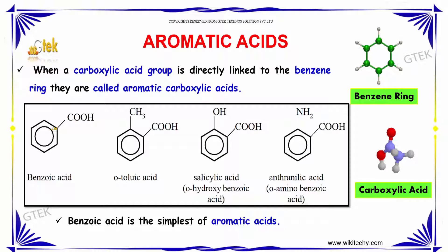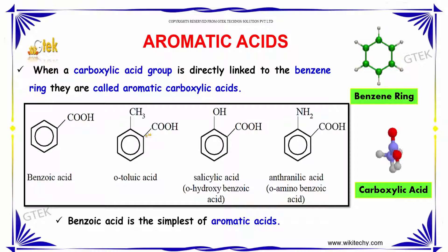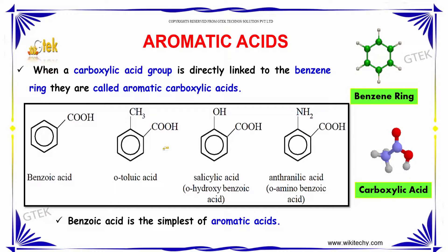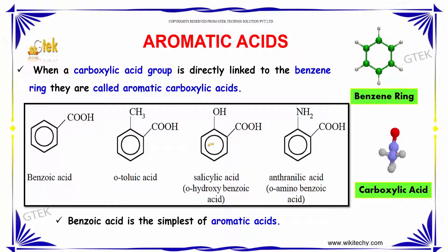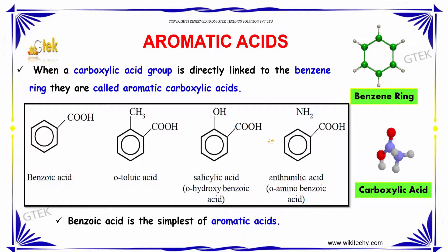When the COOH group is attached to benzene, it is called benzoic acid. When it is attached to toluene, it is called orthotoluic acid. Similarly, if this group is present at the meta position, it is called metatoluic acid. When it is attached to phenol, it is known as salicylic acid. When it is attached to amine, it is known as anthranilic acid.